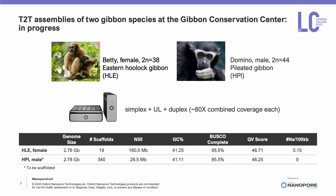To do that, I've been working on two near-complete telomere-to-telomere reference assemblies of gibbon individuals — one from Betty, a female eastern hoolock gibbon, and one for Domino, a male pileated gibbon. These assemblies were created using a combination of simplex, ultralong, and duplex nanopore sequencing data, amounting to roughly 80x of combined coverage for each species.